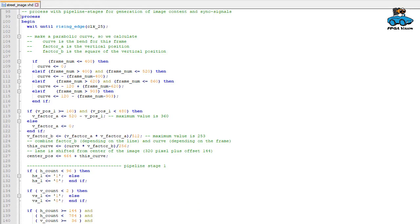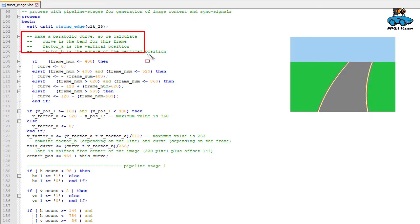This is our second process with several pipeline stages. It's an RTL description, register transfer level description, where we have different register stages. It also runs with the same 25 MHz clock. We want to have a parabolic curve, so we have to calculate several values. We have a curve which is bent for the current frame, and then we have a vertical position and a square of this vertical position.